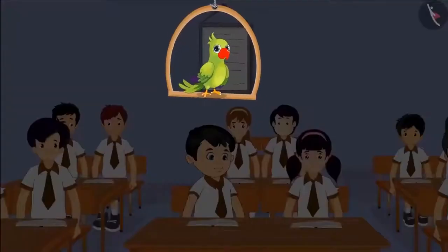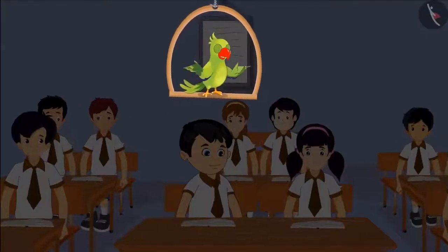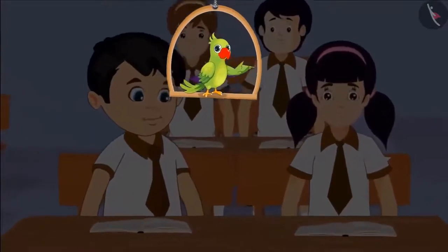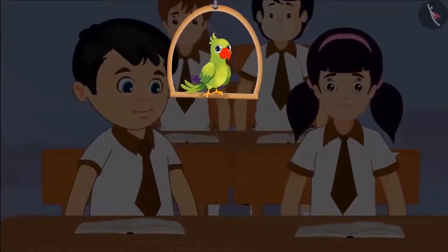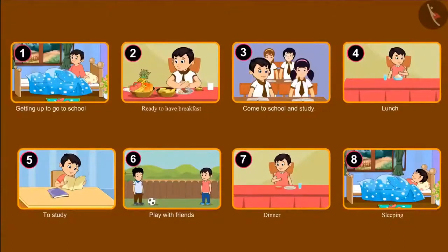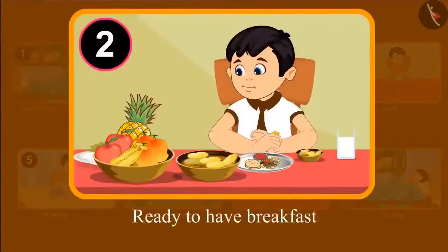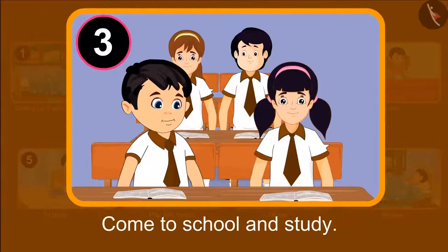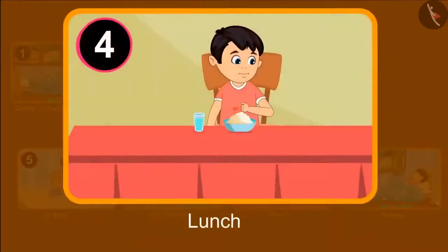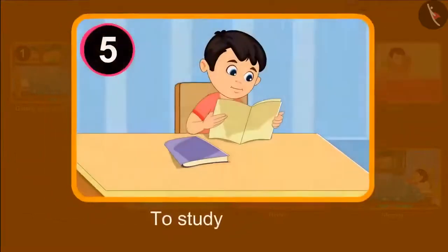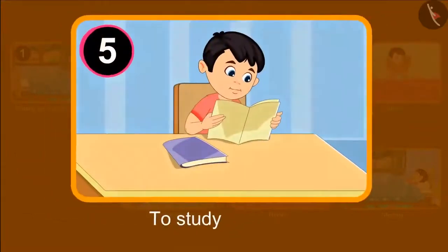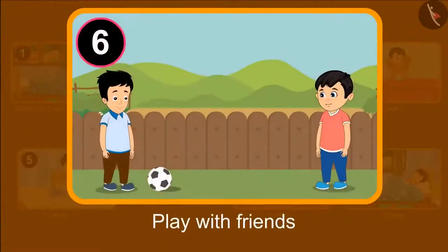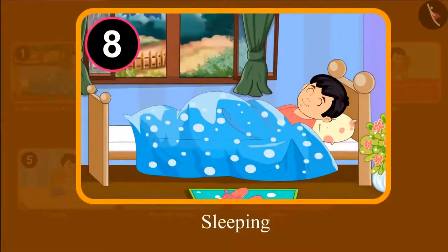The next day in Chotu's class, his madam asked everyone to write their routine. Chotu wrote down his routine: he got up early in the morning, then got ready and had breakfast, after that went to school and studied, then came back in the afternoon and had food. Then he studied again, after studying went to play with his friends, and then went to sleep after having dinner. This was Chotu's routine.